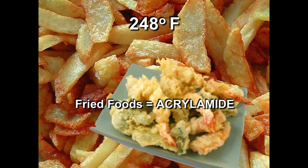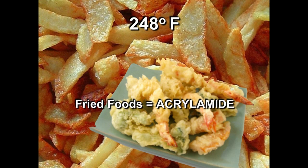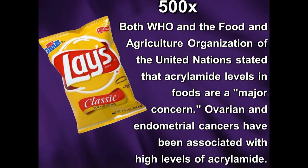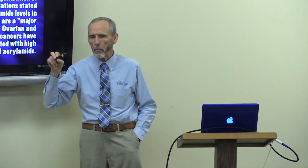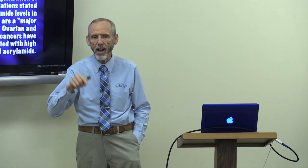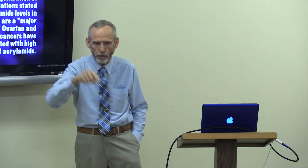Fried foods — when you fry foods, especially potato chips, it produces a substance called acrylamide. The World Health Organization uses acrylamide to sterilize water. According to the WHO and the Food and Agriculture Organization of the United Nations, acrylamide levels in foods are a major concern — ovarian and endometrial cancers have been associated with high levels. A bag of potato chips contains acrylamide at 500 times above what they use to sterilize water.